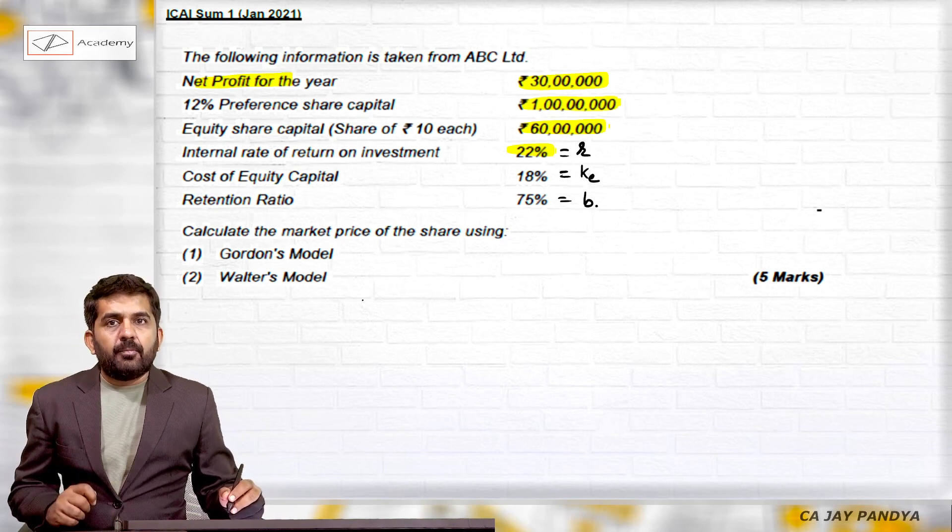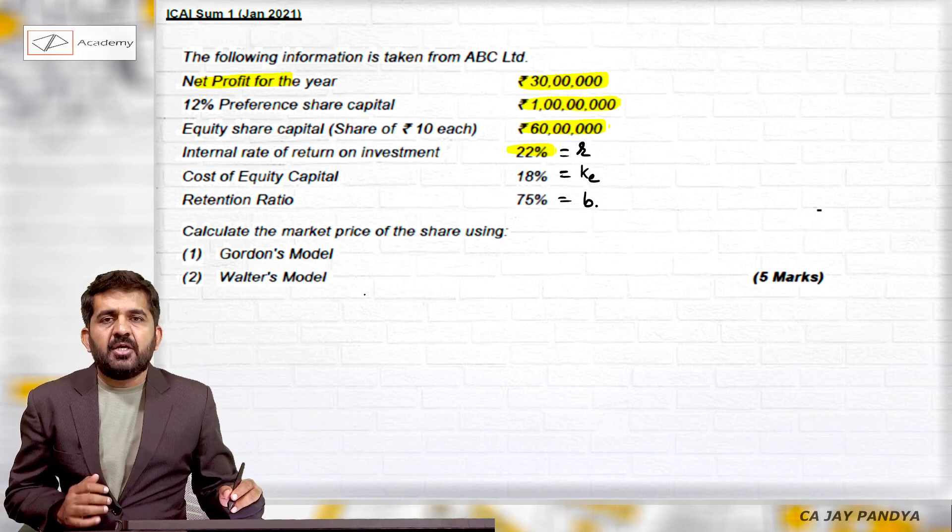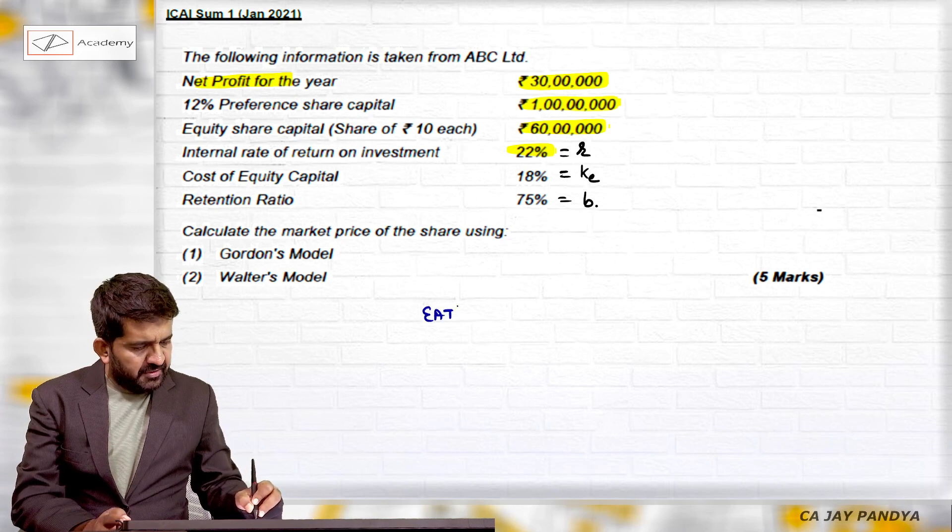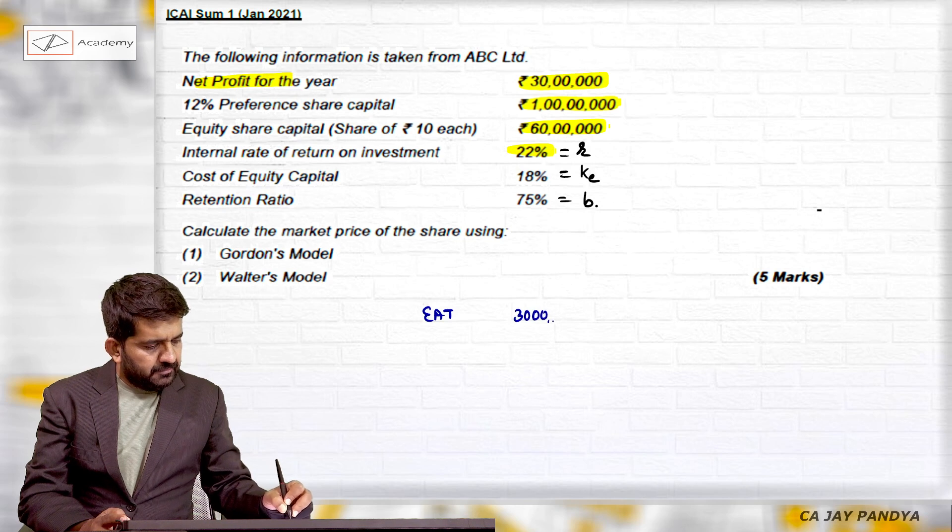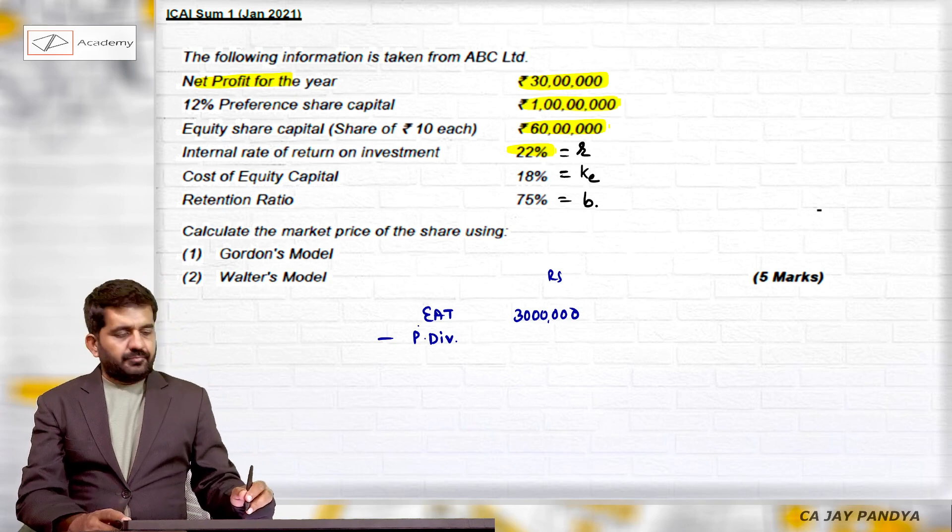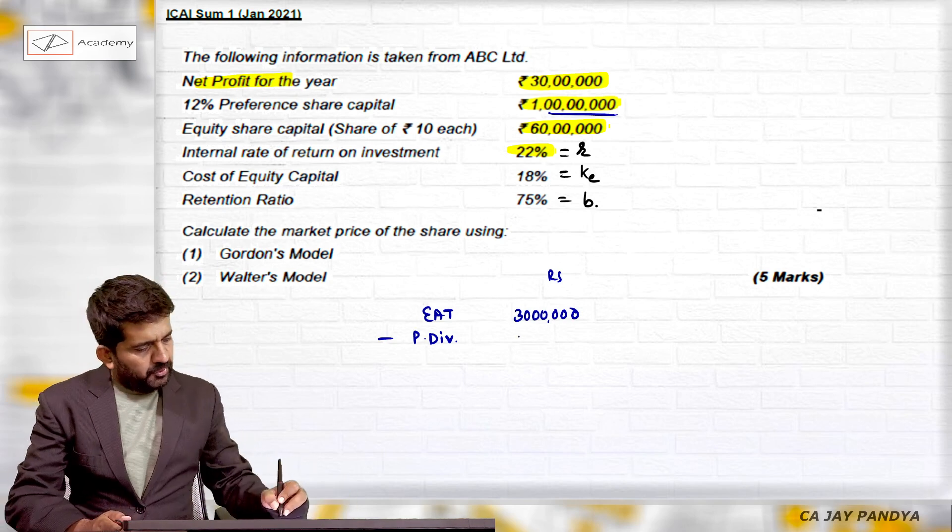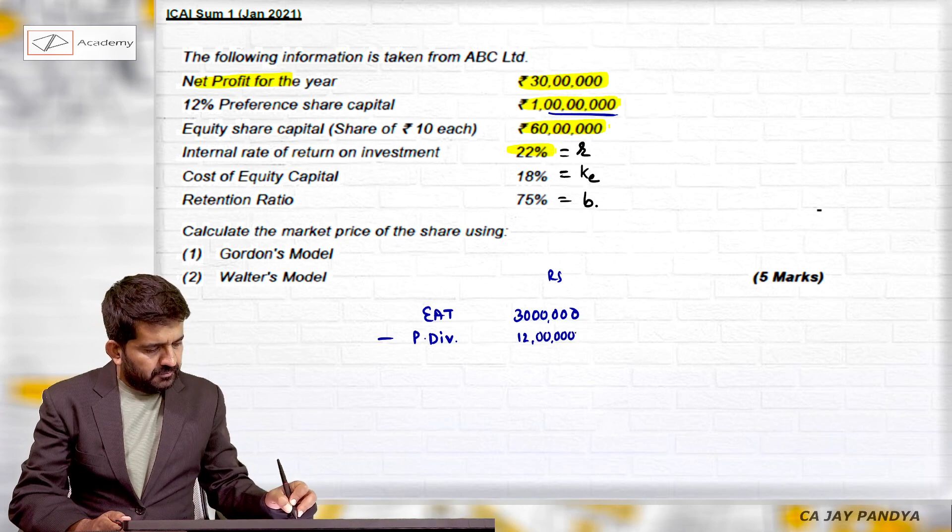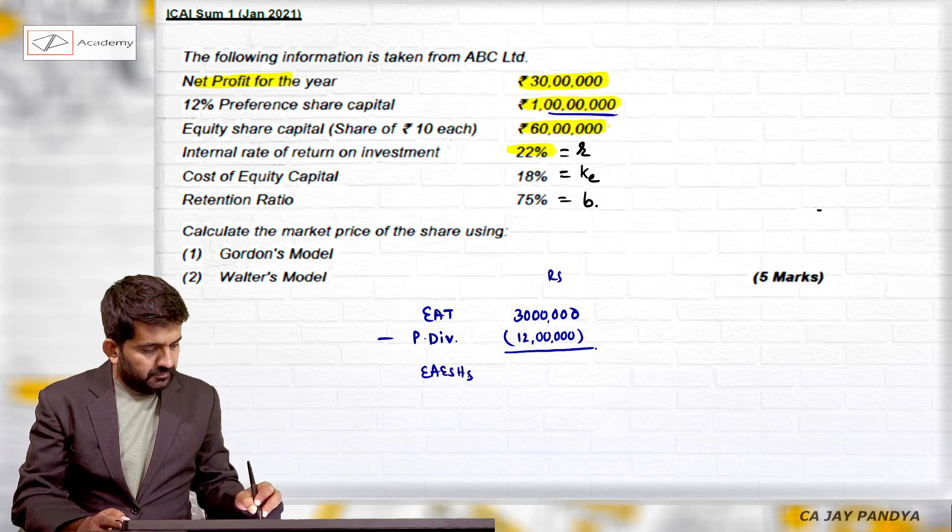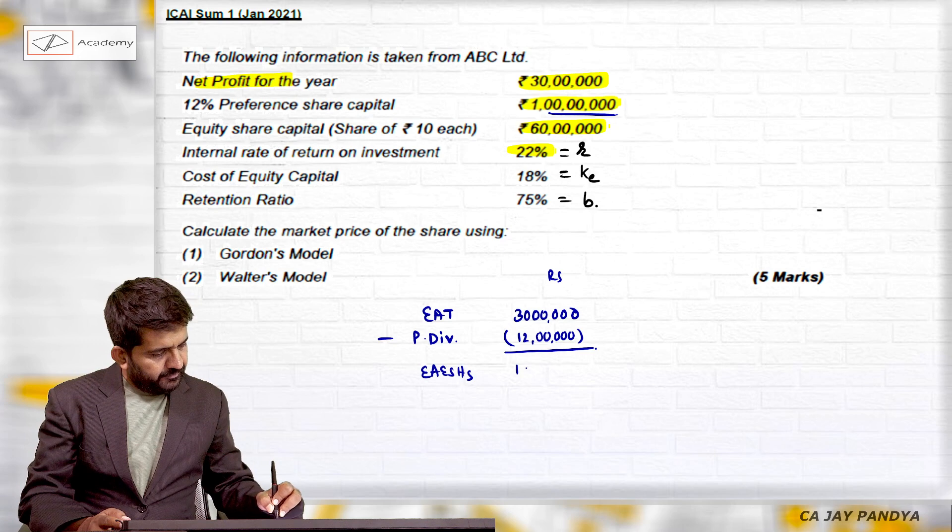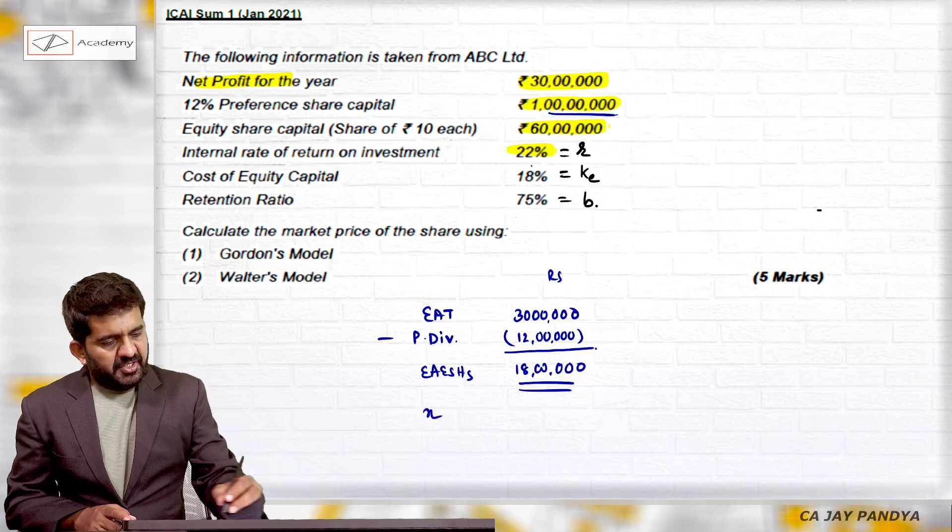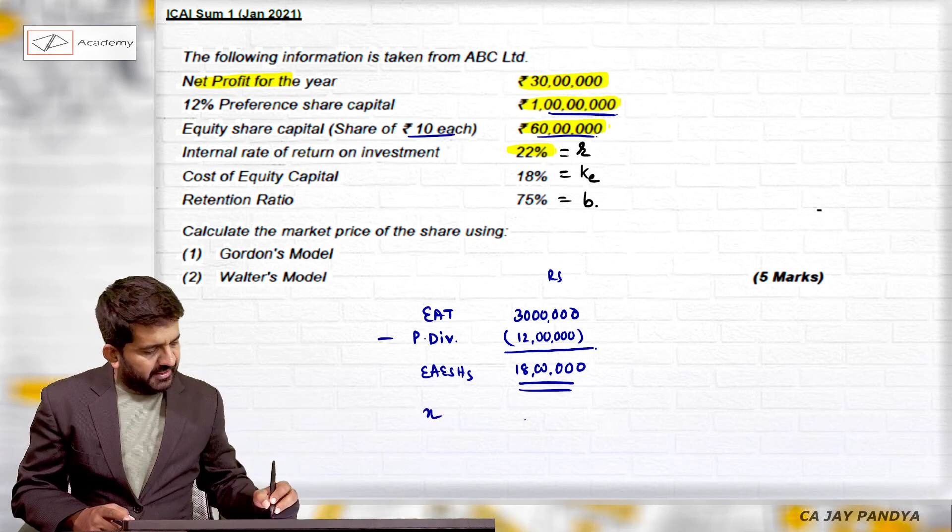For both models we will require dividend per share. For dividend per share, first we need to find out earning per share. What is given? EAT is given - earning after tax is 30 lakhs minus preference dividend. Preference dividend will be 1 crore into 12%, which is 12 lakhs. This will be earnings available to equity shareholders, which will be 18 lakhs. Number of shares: 60 lakhs divided by 10 is 6 lakhs.